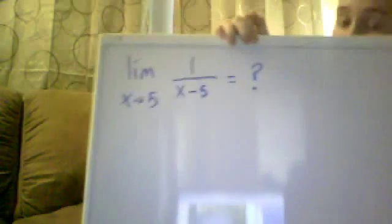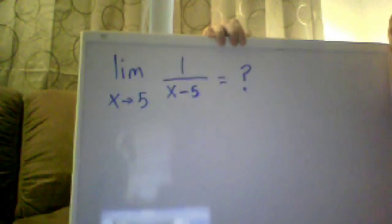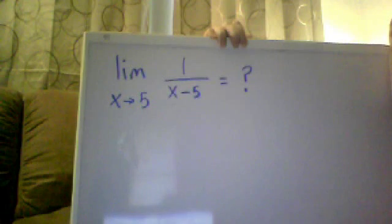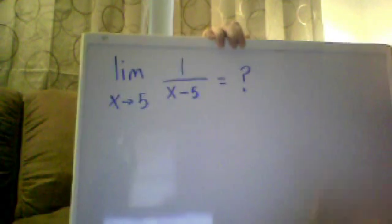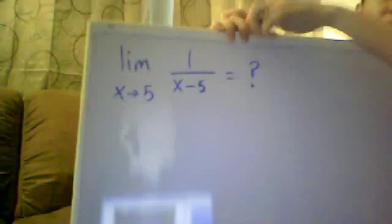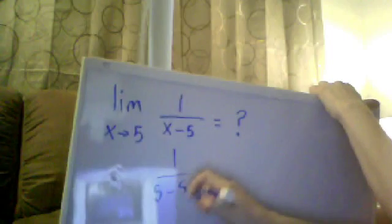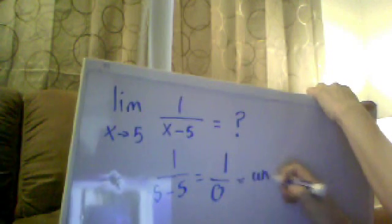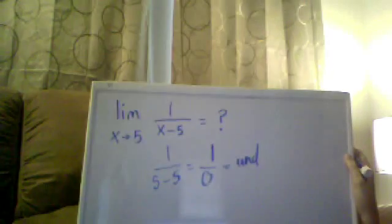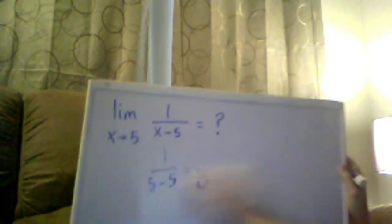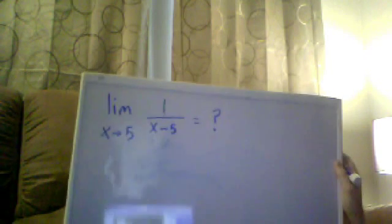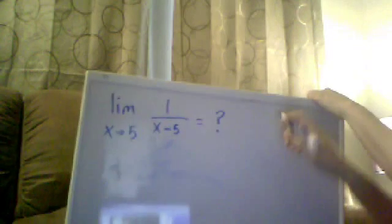Now we're going to look at limits a little bit differently and talk about limits as we're approaching a certain value. This is what we have to do on number one and number four on the homework, where we have the limit as X approaches a number of a function, and that number doesn't actually work out very well. Like if I plug in five into this function, I get one over zero, which is undefined. So that's the whole reason we are looking at the limit as we go towards this value.